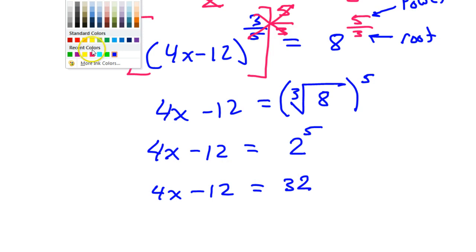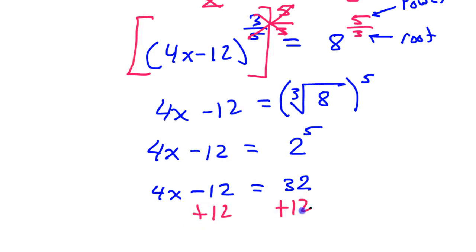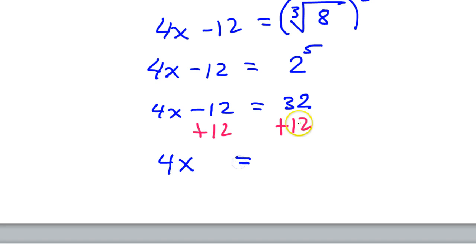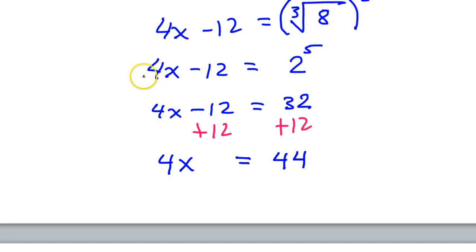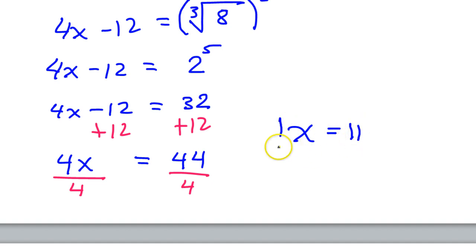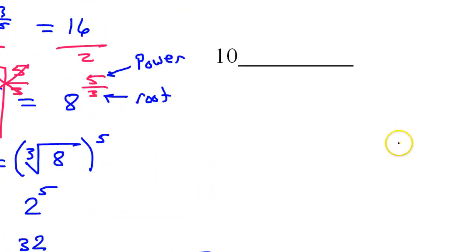The cube root of 8 is 2, and then to the fifth power: 2 to the fifth is 32. So 4x minus 12 equals 32. Add 12 to both sides: 4x equals 44. Divide by 4: x equals 11.